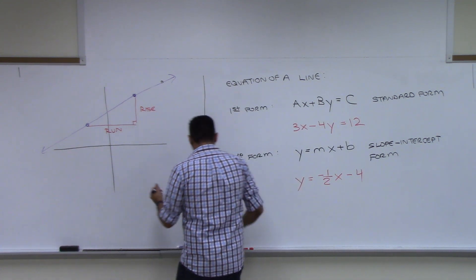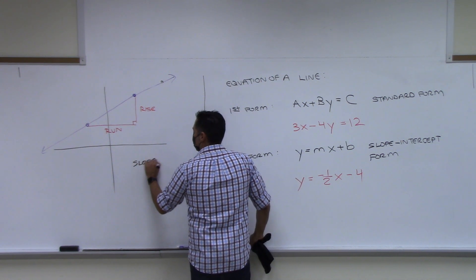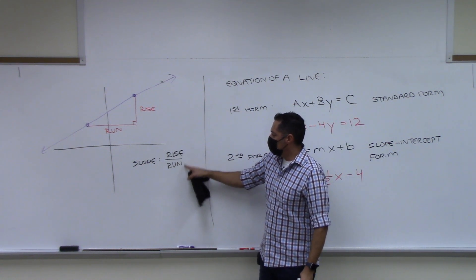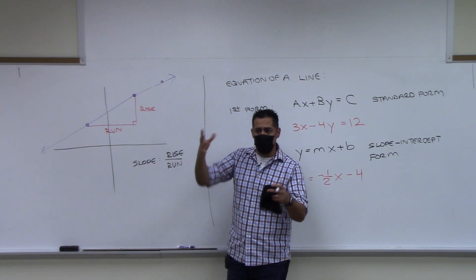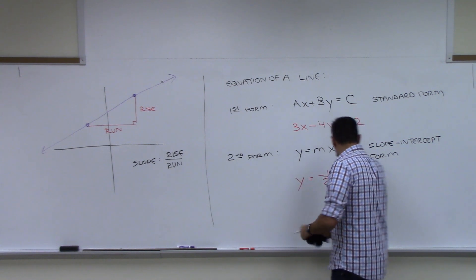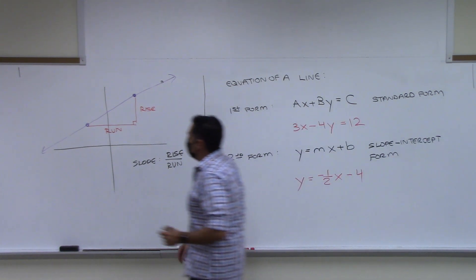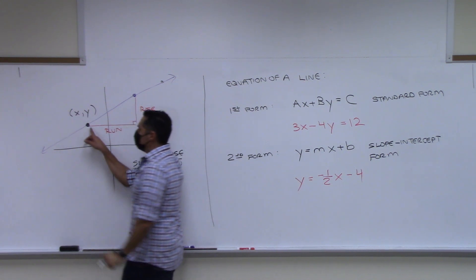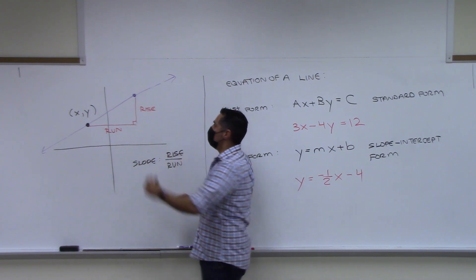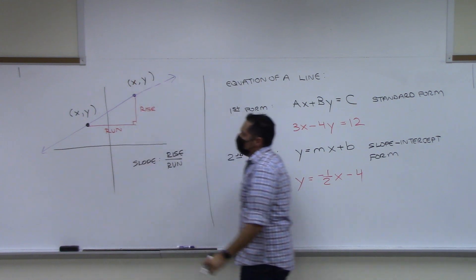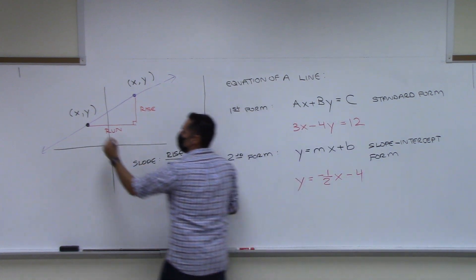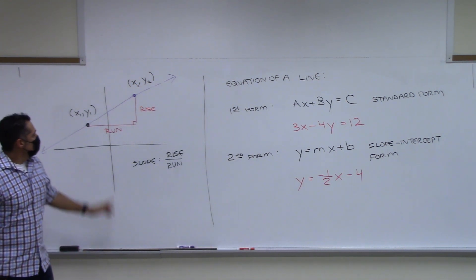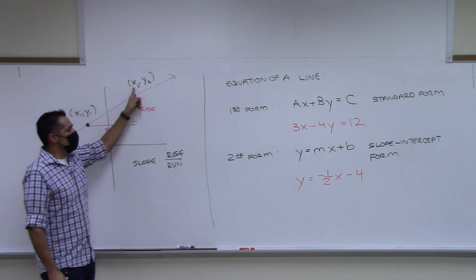What's important now is how do we get the rise and run from two given points. So I'm going to label the first point as x-sub-1, y-sub-1, and the second as x-sub-2, y-sub-2 — that way you can distinguish them. x-sub-1 is the x-coordinate of the first point, y-sub-1 is the y-coordinate of the first point, and similarly for the second point.